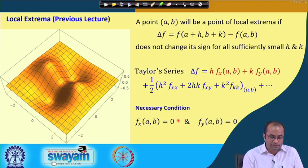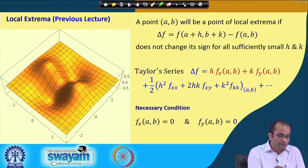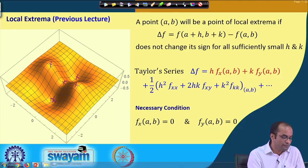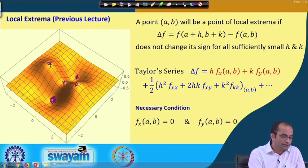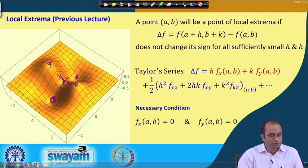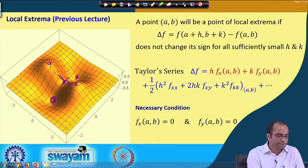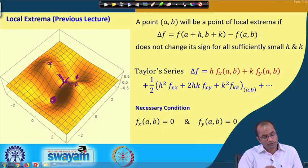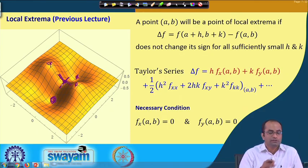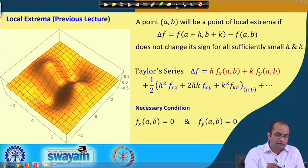We observed that there are, for example, 5 points which satisfy these conditions. In this lecture we will identify whether each point is a local minimum, local maximum, or saddle point. Here some points look like local minima, some are local maxima, but at one point, if we go in the direction of x the function is increasing, while in the direction of y it is decreasing — so that point is a saddle point, not a local extremum.